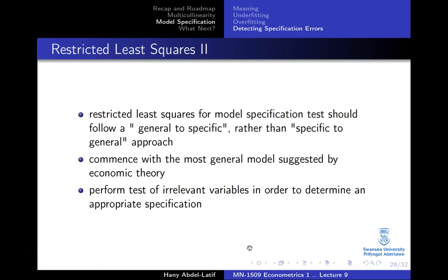As good practice, go from general to specific rather than specific to general. If you have five or six variables and are unsure which to include, start with all of them and test one by one using a t-test, or test two or three jointly using an F-test, the same way we explained in lecture three.